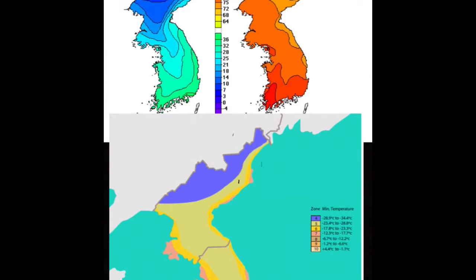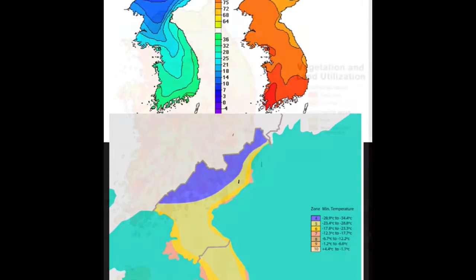South Korea has humid subtropical and humid continental climate. These climates are moderate with hot, humid summers and cold, snowy winters. The temperature in summer ranges from 72 to 82 degrees. Temperature in the winter ranges from 20 to 40 degrees.